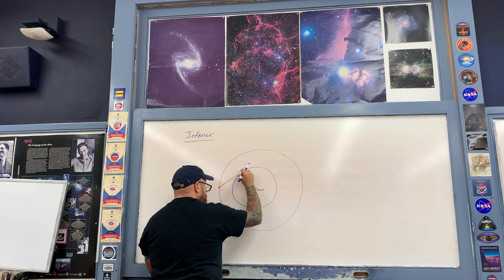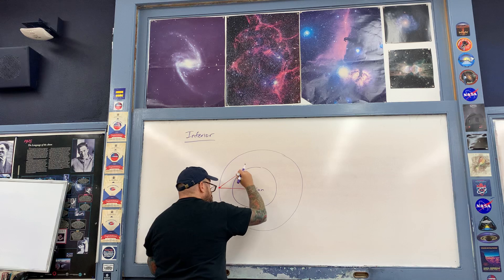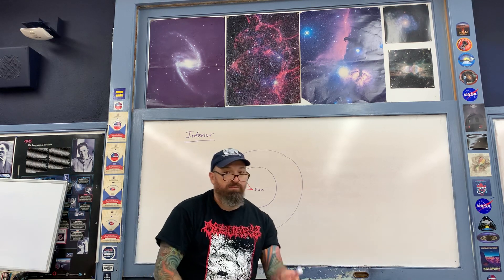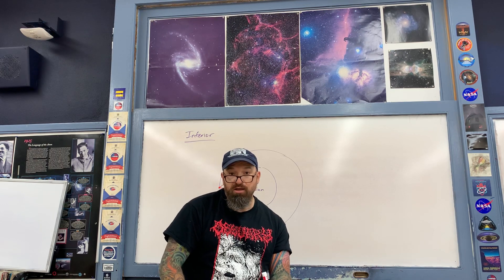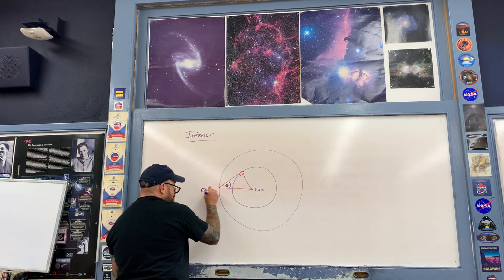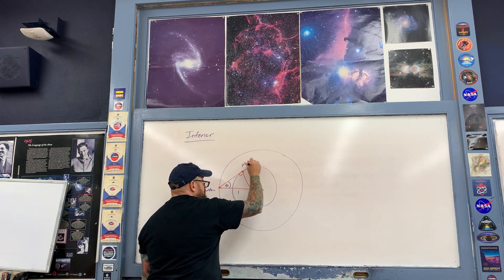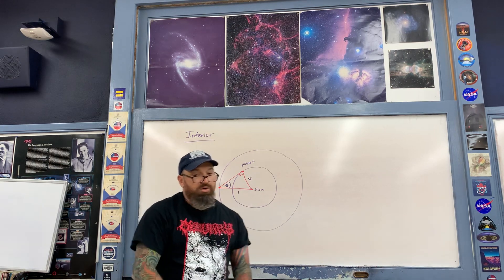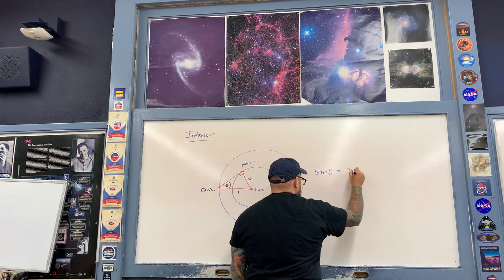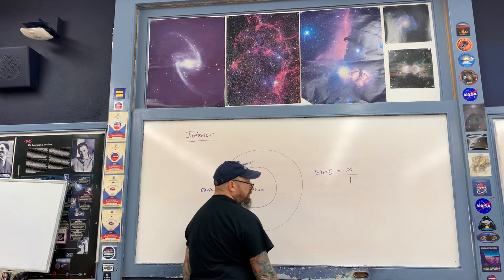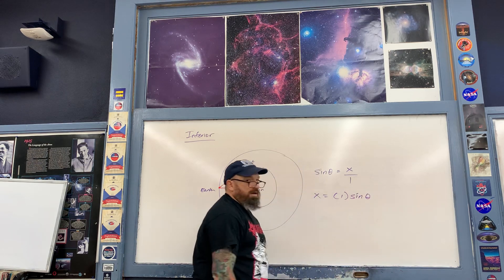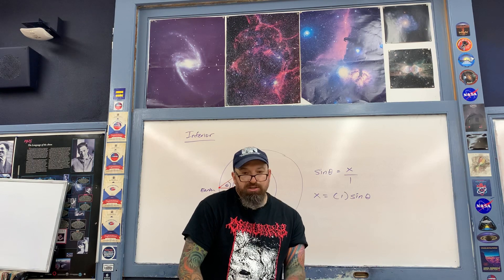Here's the orbit of the Earth about the Sun, here's the orbit of the planet about the Sun, and here's the Sun. A right triangle is constructed with the Earth, the planet, and the Sun, with the right angle at the planet. The elongation angle theta is at the Earth. The distance from the Earth to the Sun is 1 AU (the hypotenuse), and the distance from the planet to the Sun is x, the unknown. Using SOHCAHTOA — right triangle trigonometry — sine of theta equals the opposite side x divided by the hypotenuse 1 AU. Solving for x: x equals 1 AU times sine(theta), so all we calculate is the sine of the angle.